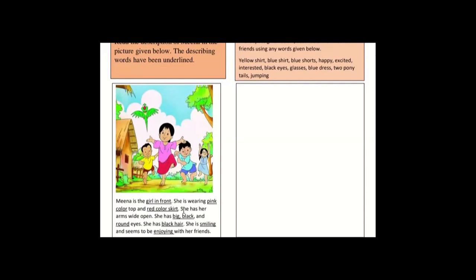The describing words used are: girl in front, pink color, red color skirt, big black, round eyes, black hair, smiling, and enjoying. As you can see, Mina has a physical description here, her personality has also been explained, and her feelings and emotions come through.